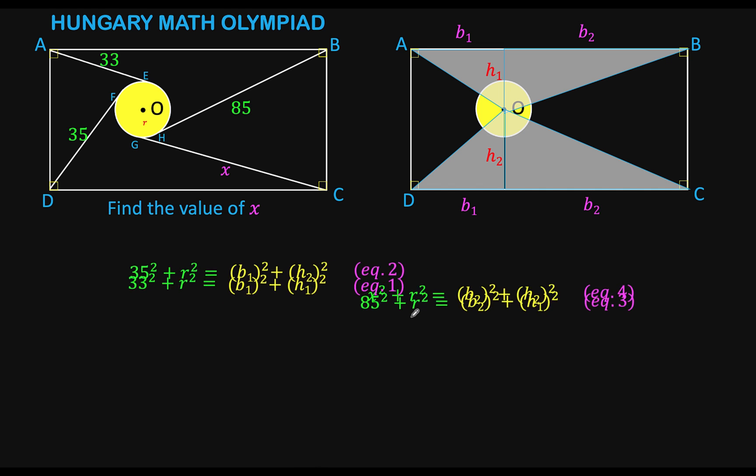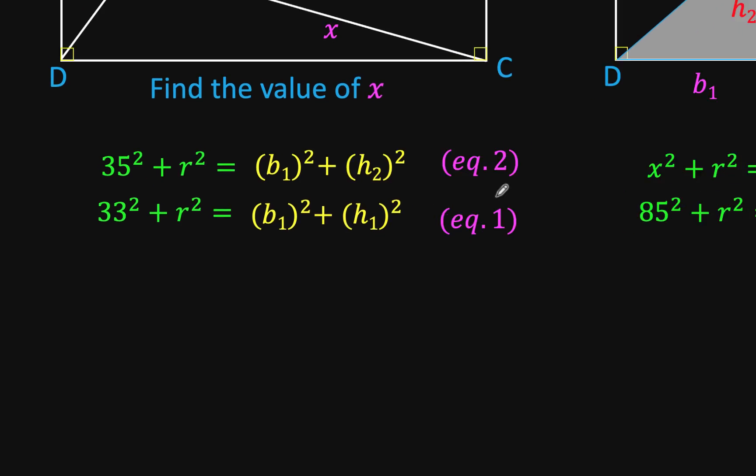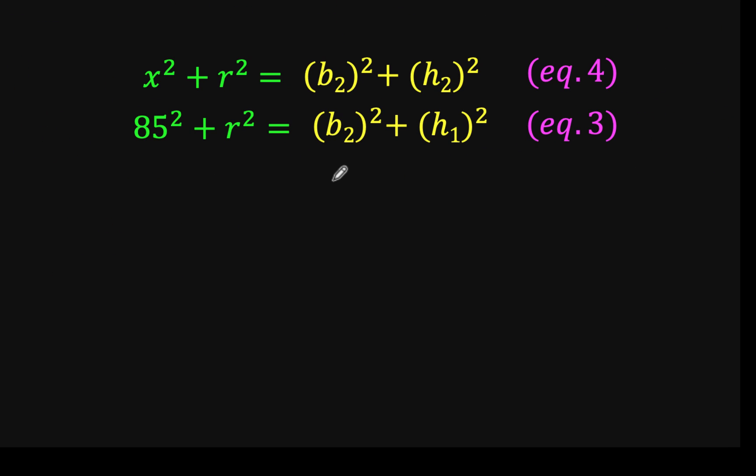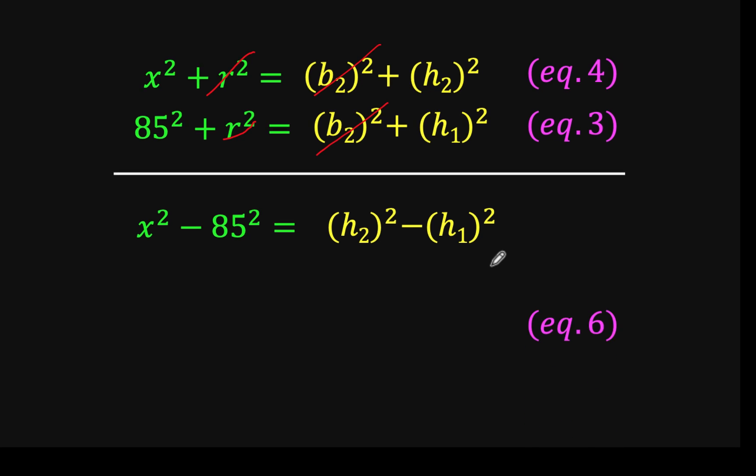But notice that by elimination, we can pair these equations together like this and subtract equations 2 and 1. This R squared and R squared will result to 0. This B sub 1 squared and B sub 1 squared will also result to 0 when subtracted. And so what we have is 35 squared minus 33 squared equals B sub 2 squared minus H sub 1 squared. Let's call this as equation number 5. Then in here, subtracting equations 4 and 3, again, R squared minus R squared is 0. B sub 2 squared minus B sub 2 squared is 0. So the difference is X squared minus 85 squared at the left side. At the right side is H sub 2 squared minus H sub 1 squared. Let's call this as equation number 6.